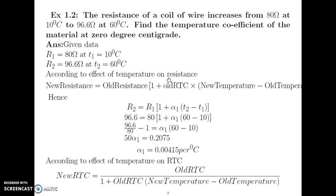Since no value of RTC is given, we first calculate it. According to the effect of temperature on resistance, new resistance equals old resistance multiplied by 1 plus old RTC into the bracket of new temperature minus old temperature. So R2 equals R1 times 1 plus alpha1 times (T2 minus T1). Substituting all known values and solving for alpha1, we get alpha1 equal to 0.00415 per degree Celsius.